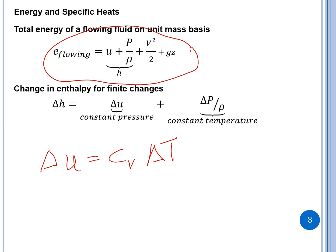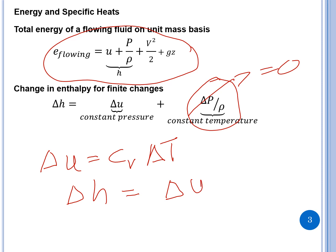The enthalpy for finite changes can be written as delta h = delta u + delta(p/ρ). If pressure is constant, the change in pressure is zero, so delta h at constant pressure equals just the change in internal energy delta u. For a constant temperature process, there is no change in temperature so delta u goes to zero, and delta h equals only the change in flow work, delta(p/ρ).